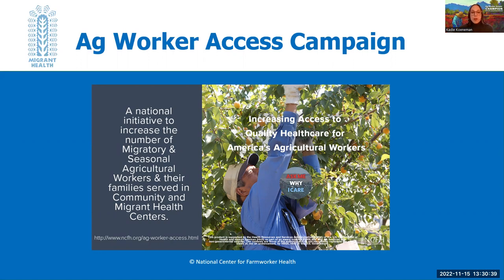Due to the impact of COVID-19, we saw a decrease in the number of ag workers served. But we're excited to share that the 2021 UDS data showed that we have surpassed our halfway mark of 1 million ag workers served, and we're confident that we'll keep working towards our goal of reaching 2 million ag workers. We encourage you to visit the Ag Worker Access Campaign web page — a link is in the chat — to learn more and to join your health center colleagues and other ag worker advocates in supporting this special initiative.